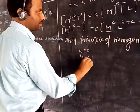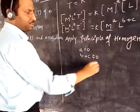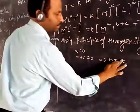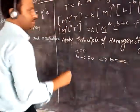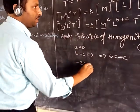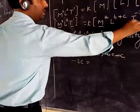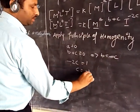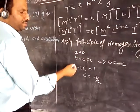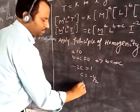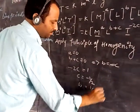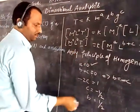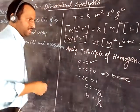And equating powers of L: b plus c will become 0, so we can say that b is equal to minus c. Now equating the powers of T: minus 2c is equal to 1, so c is equal to minus half. If c is equal to minus half, then from the above equation, b is equal to plus half. So we got: a equals 0, c equals minus half, b equals plus half.